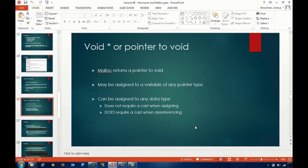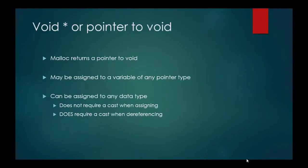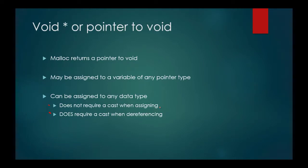There are a couple of things to keep in mind as we work with void pointers. When you assign it, it does not require a cast when assigned. So when we assign the return value from our malloc call to a pointer, we don't have to typecast it - though I'm going to show you that I will typecast it and all my code is going to typecast it. I'll show you exactly what that means here in just a few minutes. When you dereference a void pointer, however, it does require a cast. I'll walk you through both in code.